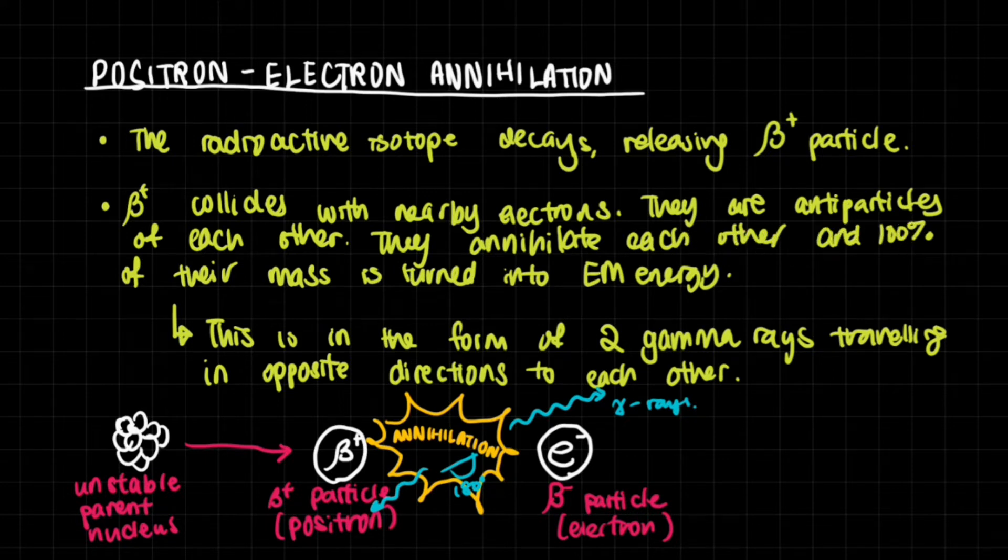They are antiparticles of each other. Electrons and positrons are the antimatters of each other. They have the exact same mass and in a lot of ways they seem the same. They're both leptons, for instance, but they have opposite charges. When they meet together, they annihilate each other and 100% of their mass is turned into electromagnetic energy.